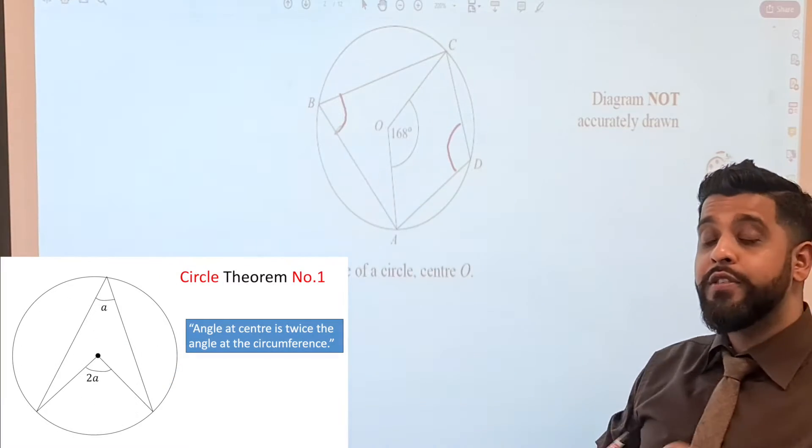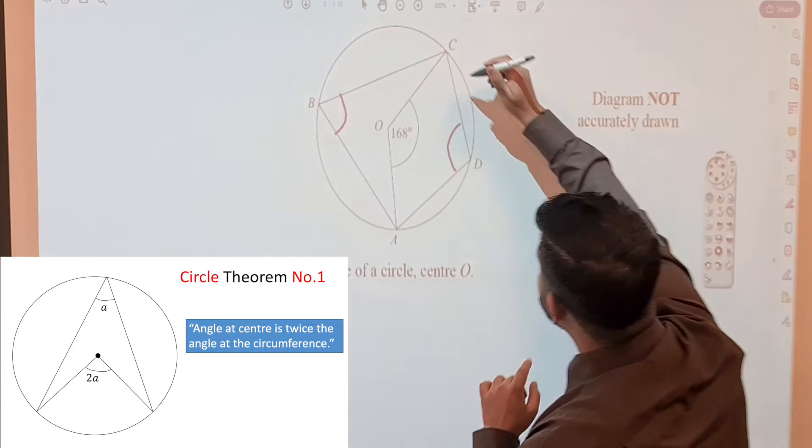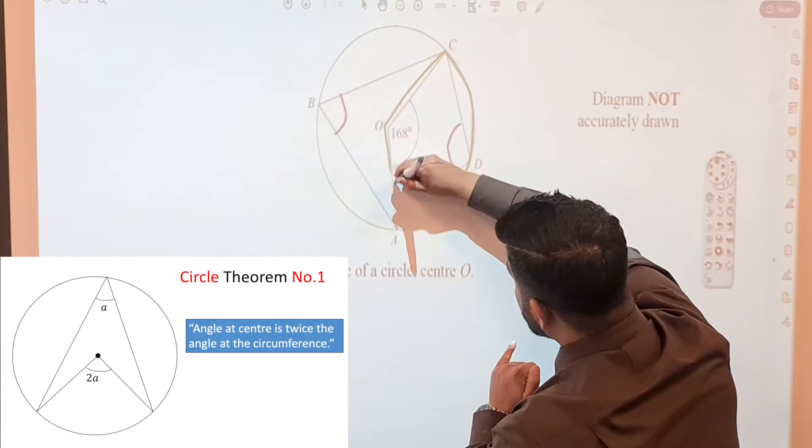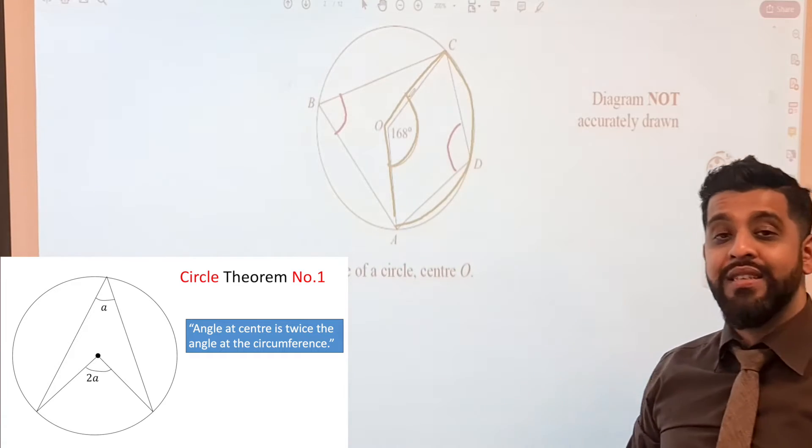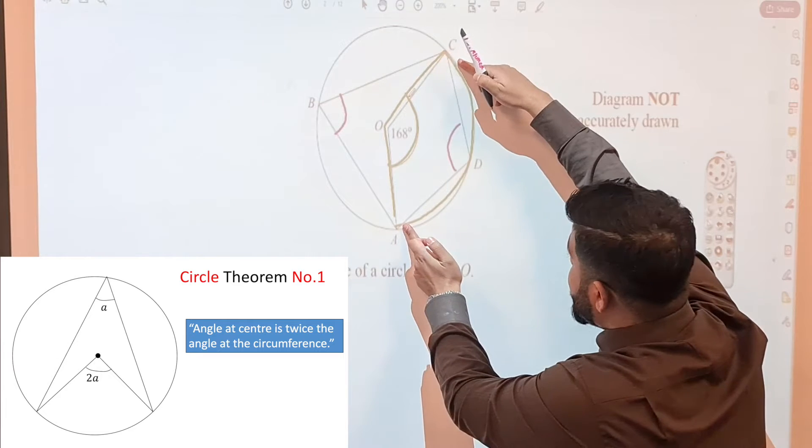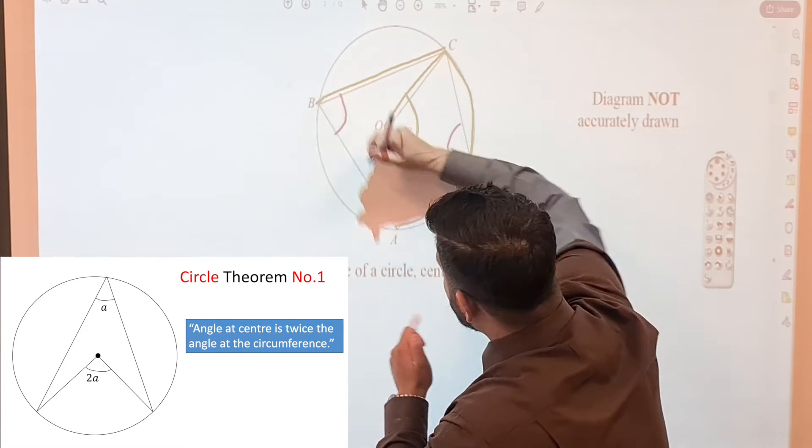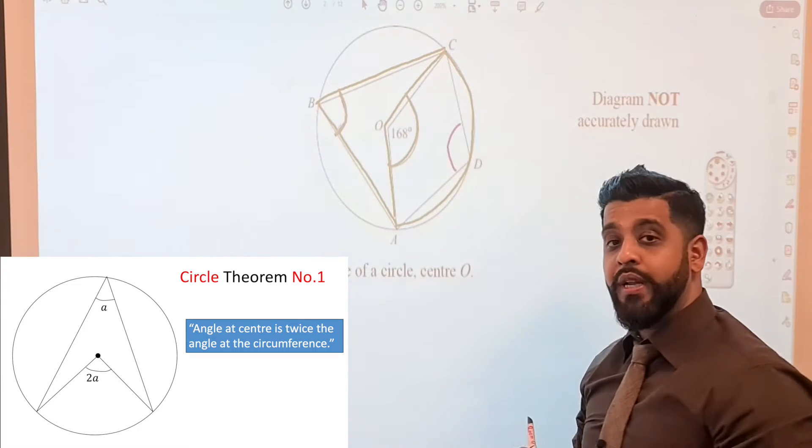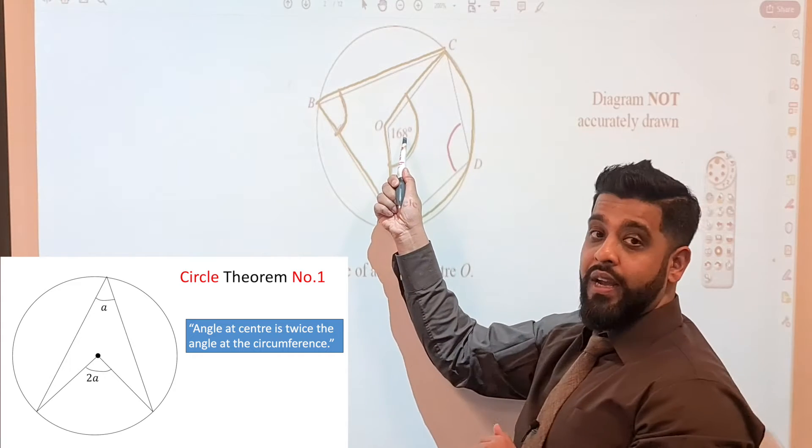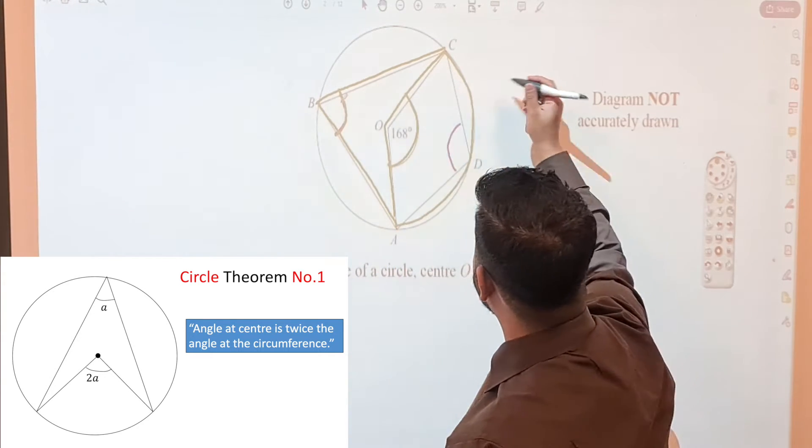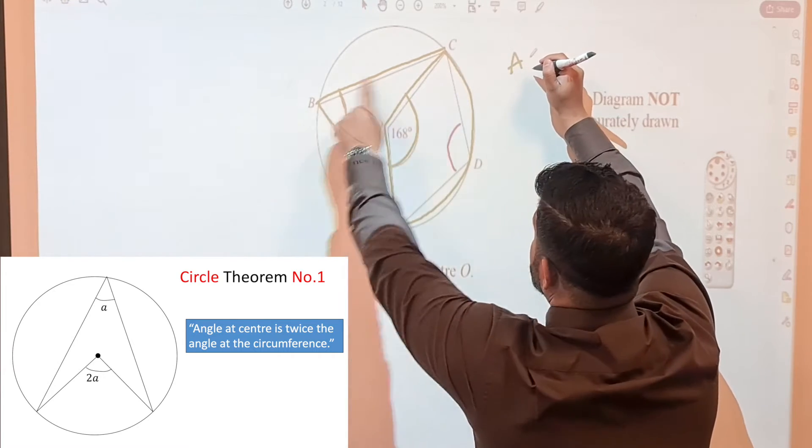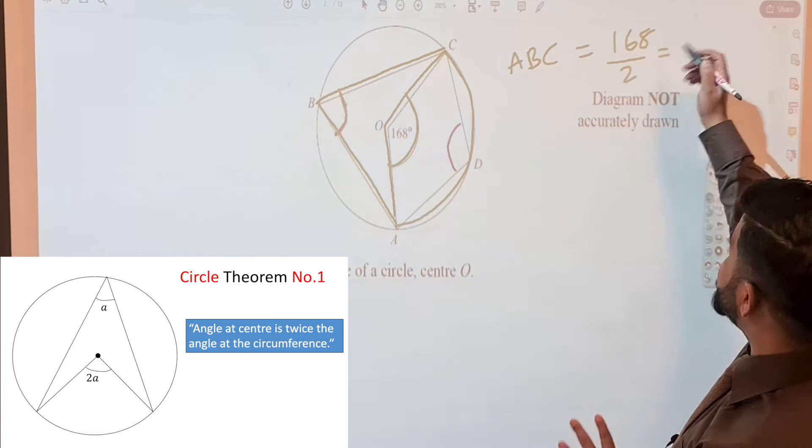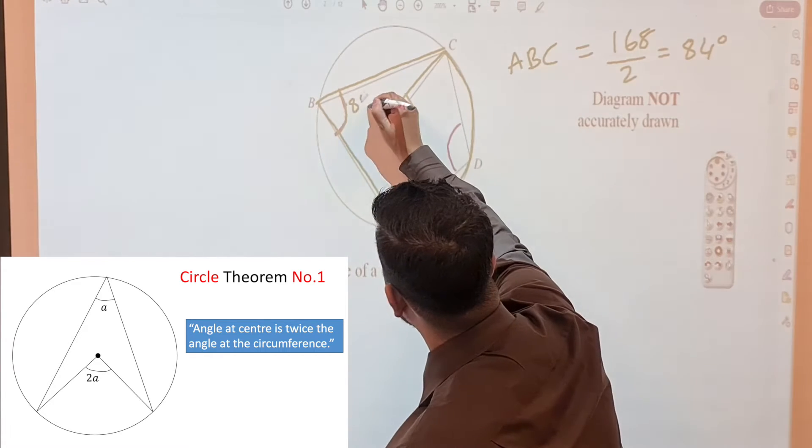If you recall circle theorem 1, this is an arc and from this arc we have two lines that go and meet at the center, giving us 168 degrees. Now from those same two points we have two more lines that continue in the other sector and they also form an angle. And that angle there will be half of the angle at the center. So angle ABC would be half of 168, so 168 divided by 2, that gives us 84 degrees.